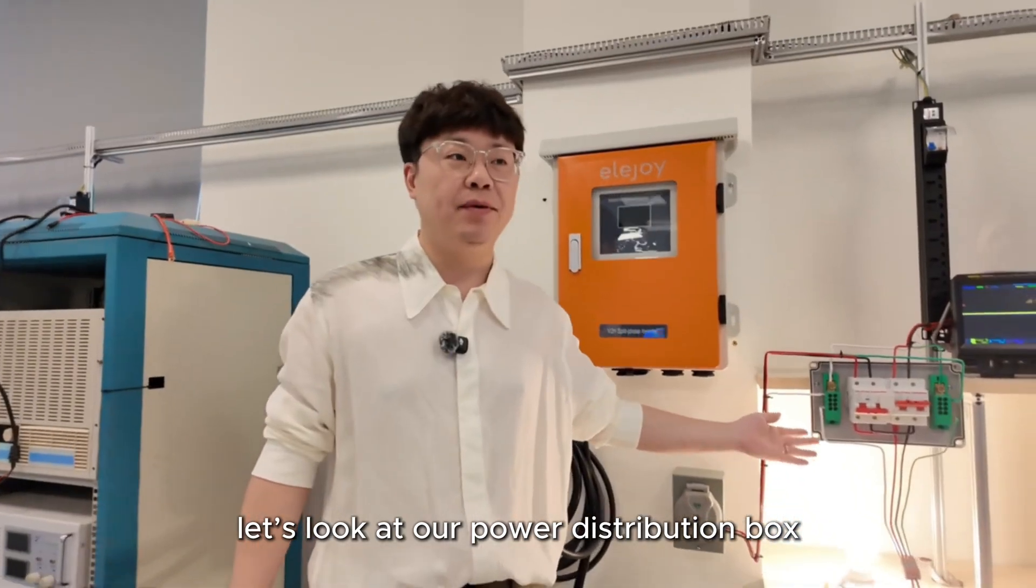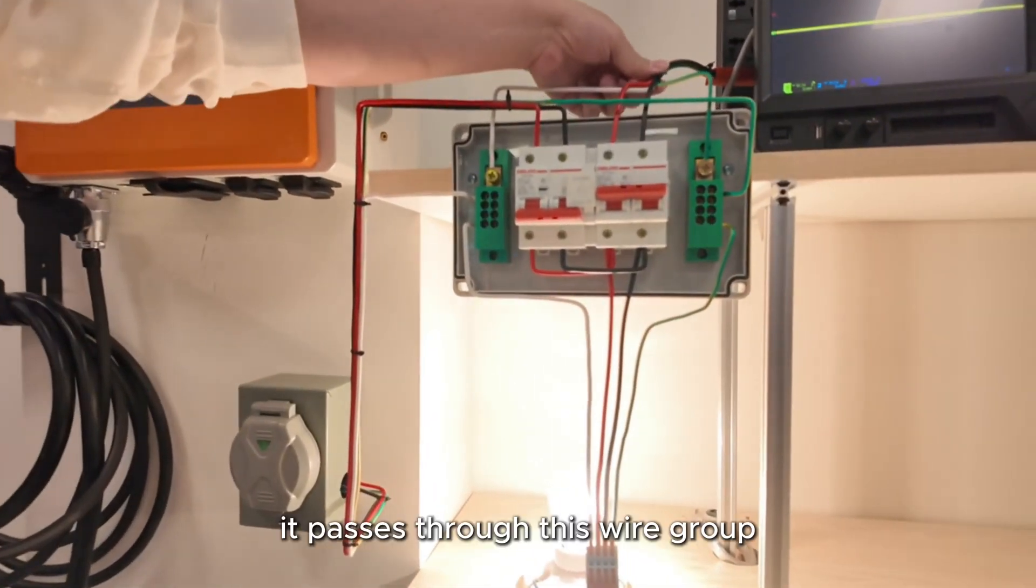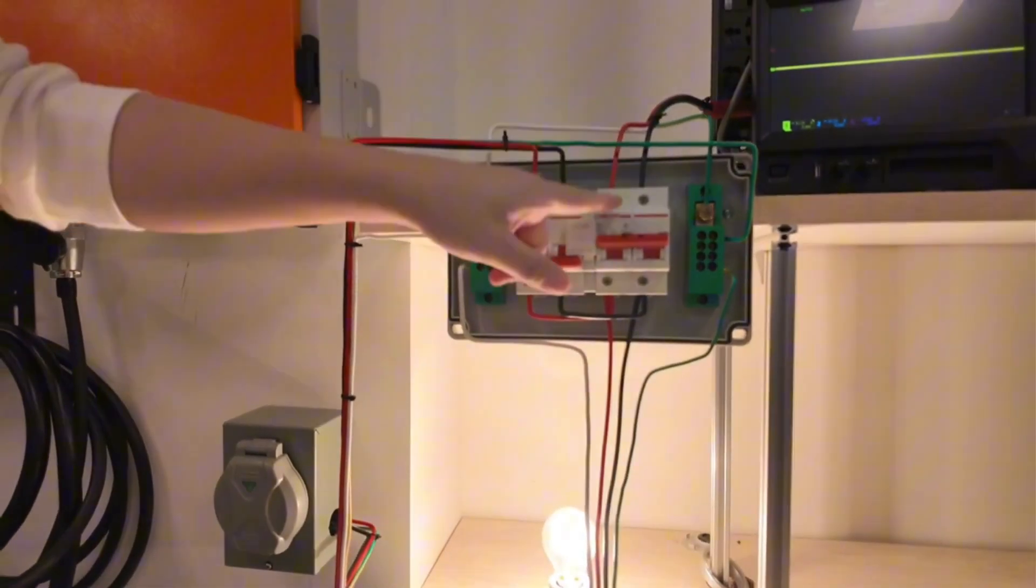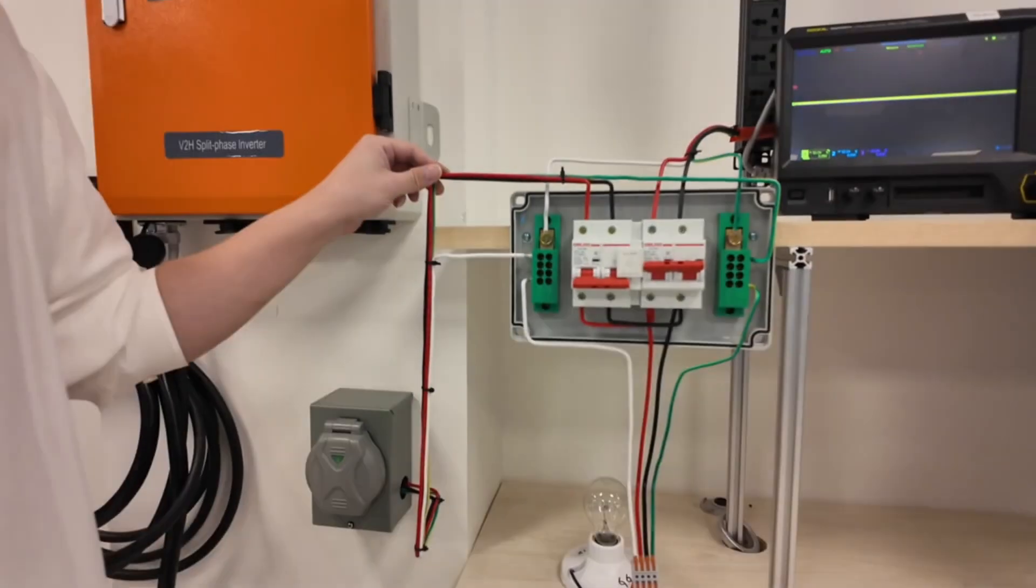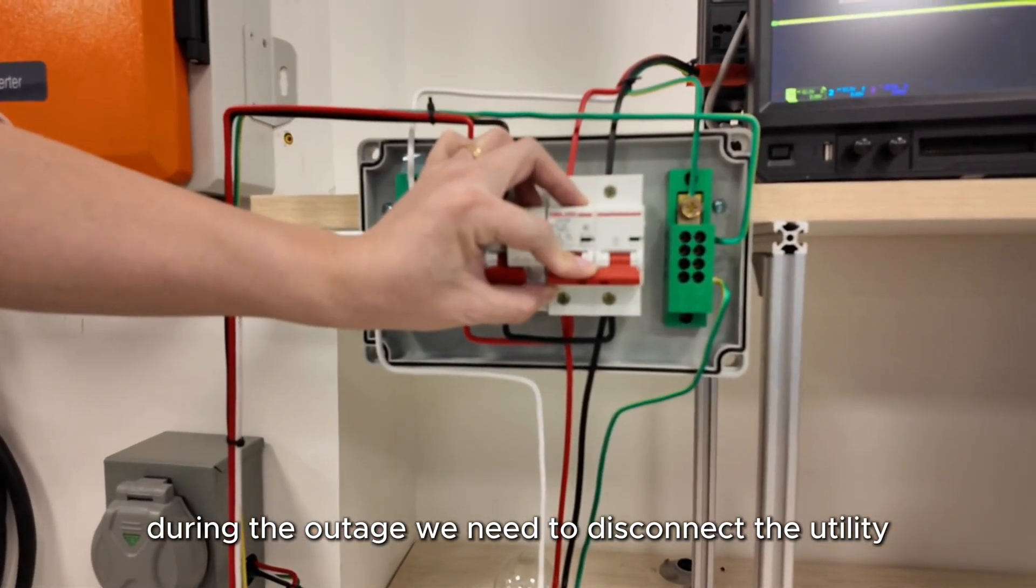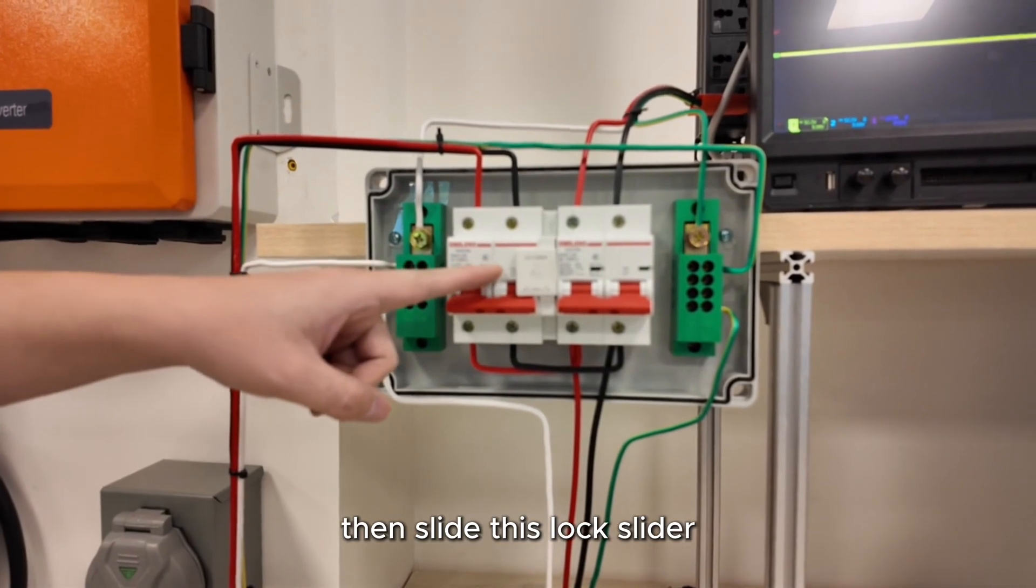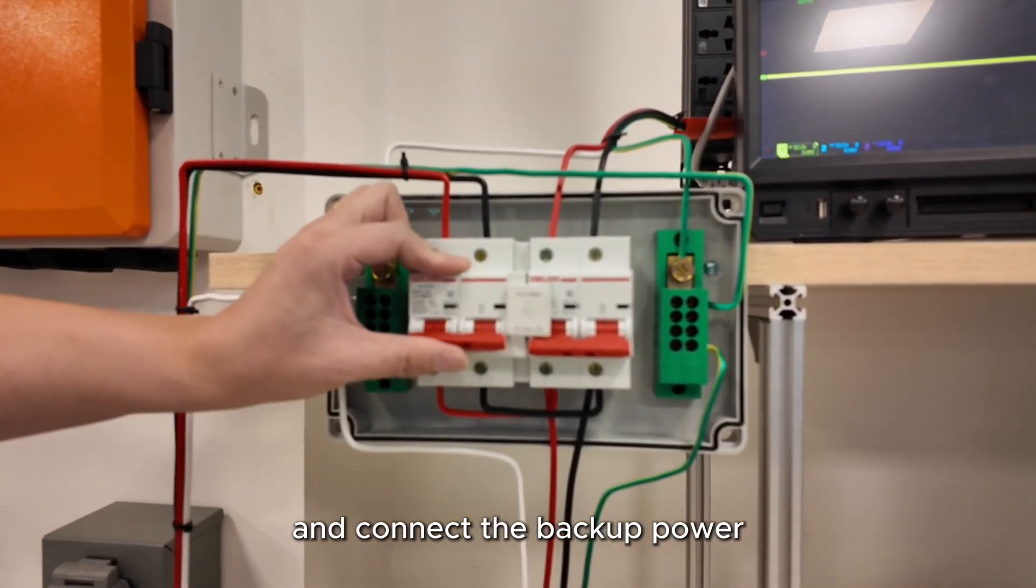First, let's look at our power distribution box. When utility power works, it passes through this wire group through the main breaker to supply the home. When the utility power goes out, during the outage, we need to disconnect the utility from the house, then slide this lock slider and connect the backup power.